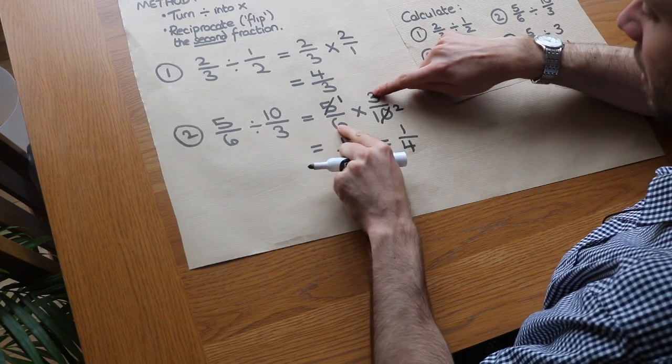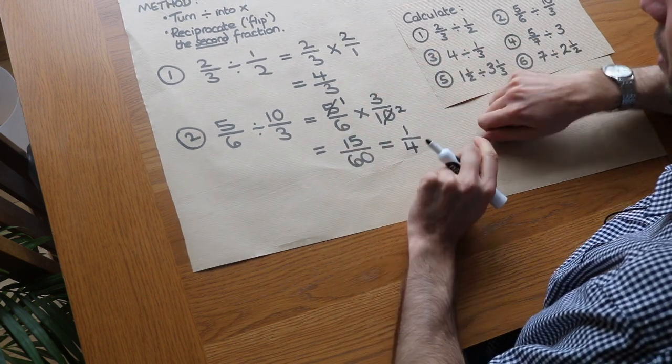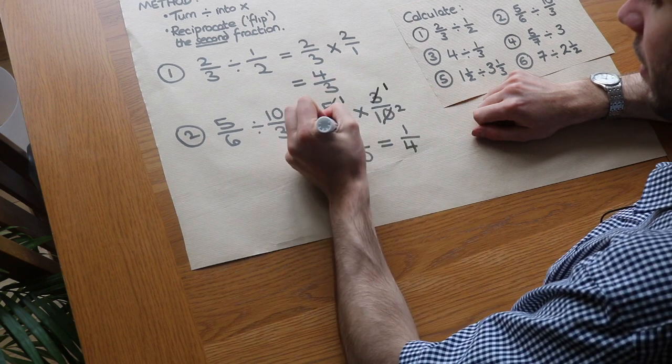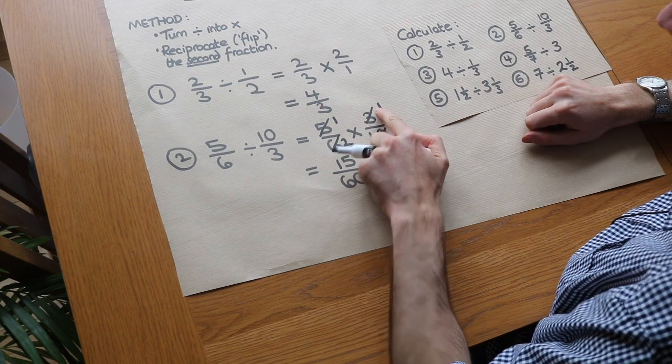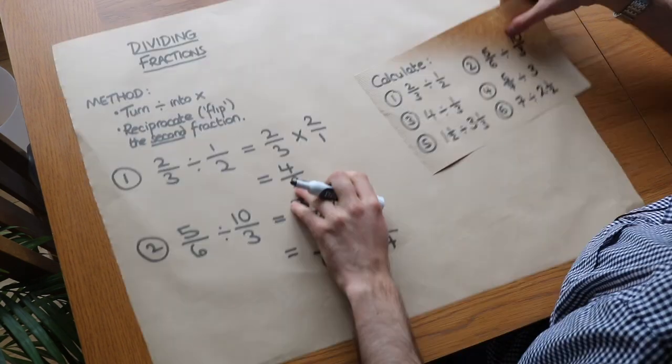We can diagonally divide this way as well. The 6 and 3 we can both divide by 3, so 3 becomes 1 and the 6 becomes 2. Then it becomes a simpler multiplication: 1 times 1 is 1, 2 times 2 is 4.